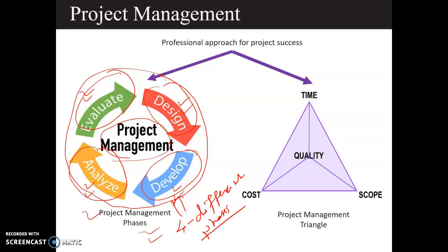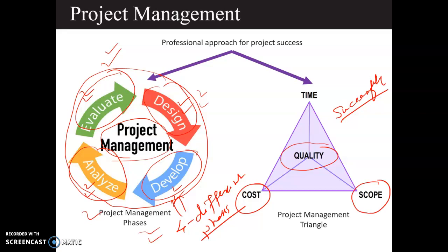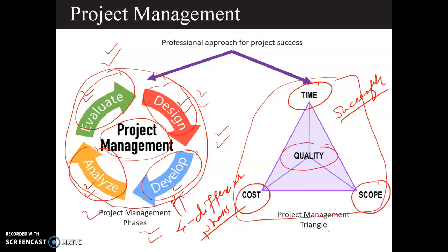Why are you doing this? Because if you divide the work into phases, your work will be more organized and structured. By following a structured and organized approach, you can maintain the quality of the project, complete the project successfully, keep it cost effective, within scope, and finish within the given time frame. That is the reason we follow a project management model — this is the quality diagram also called the project management triangle model.